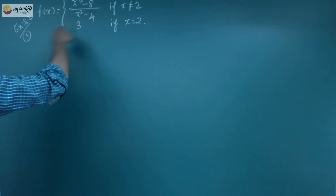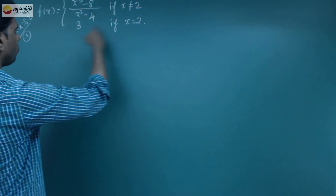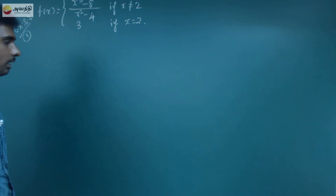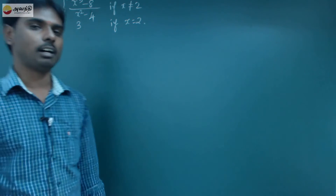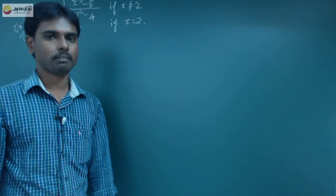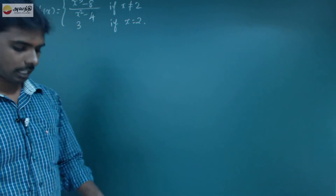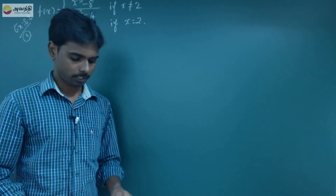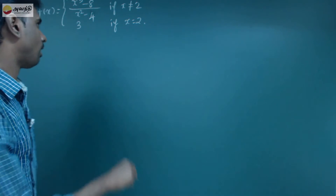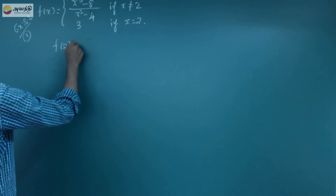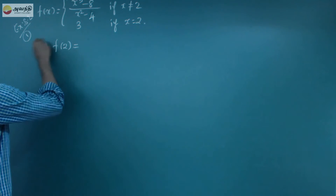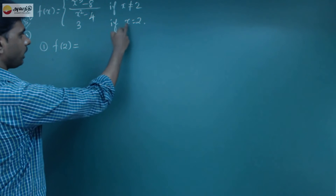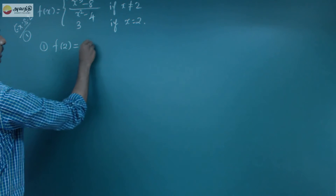The denominator is 0 at x=2. If we define f(2) equal to 3, we can define this point. So if we define this, we will check whether x=2 is continuous. The first condition is f(2), and f(2) is equal to 3.